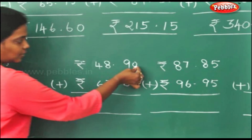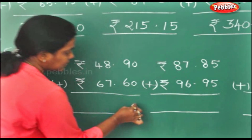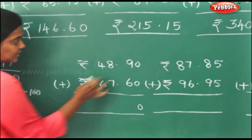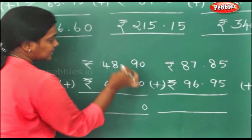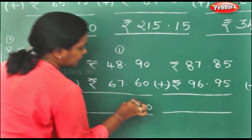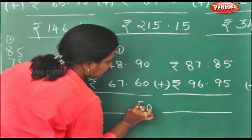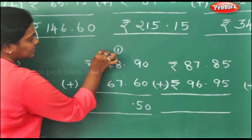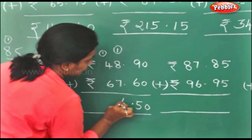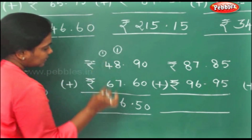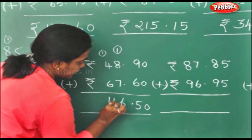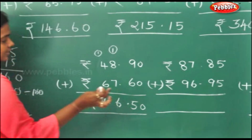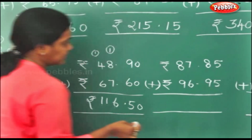0 plus 0 is 0. We are doing it from paise to rupees. 9 plus 6 is 15. 9 plus 7 is 16. 10 plus 1 is 11. Rupees 116 and 15 paise.